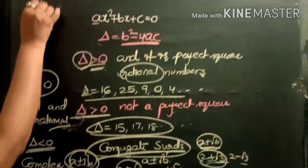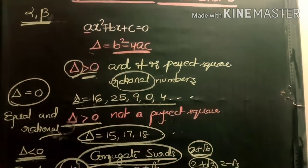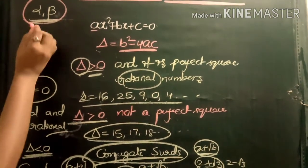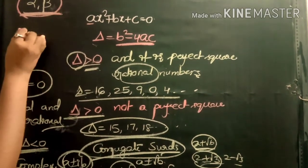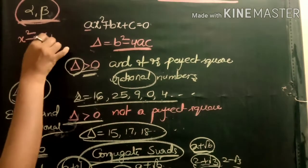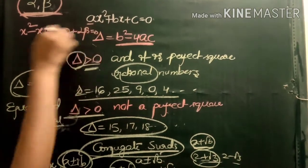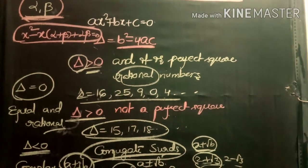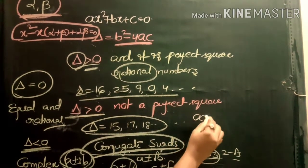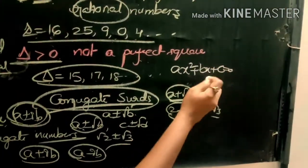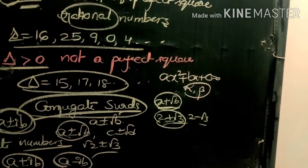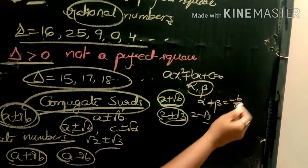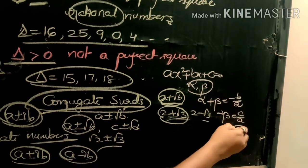Now, if alpha and beta are the roots of the equation, the quadratic equation with alpha and beta as roots is: x² − x(α + β) + αβ = 0. This is the quadratic equation when two roots alpha and beta are known.